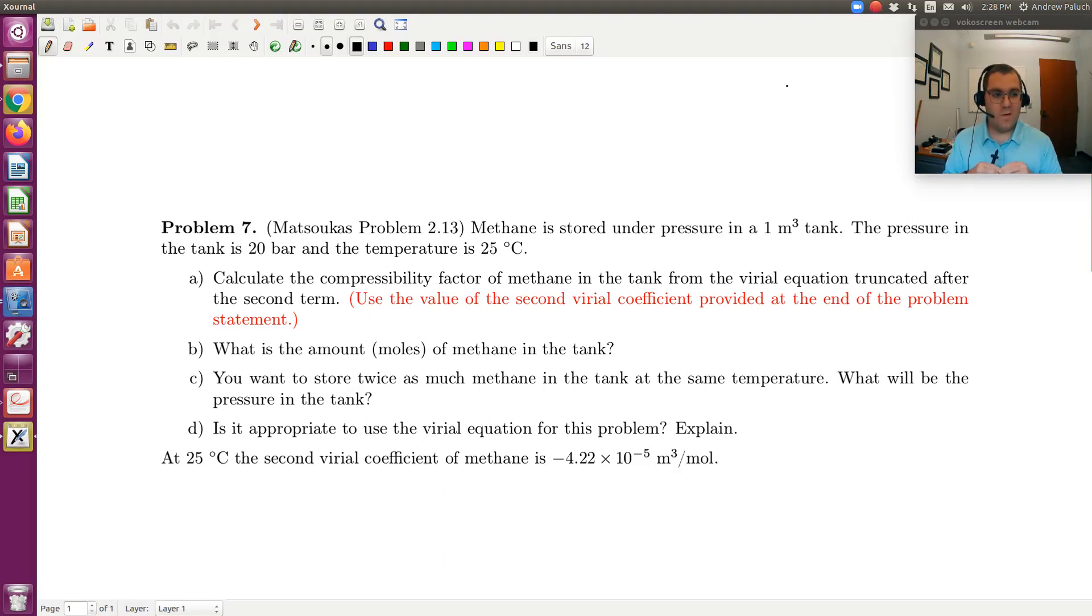Let's take a look at problem seven, which is our second example of an application of the virial equation of state. Remember in the text, when they refer to the virial equation of state, they're referring to the virial equation truncated after the second term. When we think about our power series expansions, this is our power series expansion in density truncated after the second term, so inclusion of a second virial coefficient. That's our term accounting for two-body interactions.